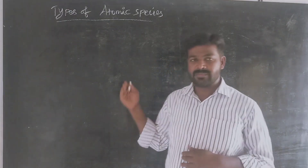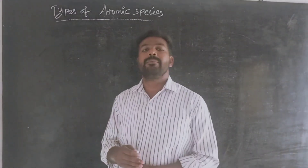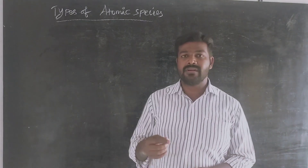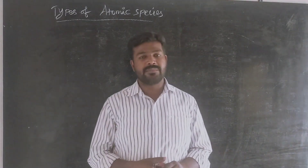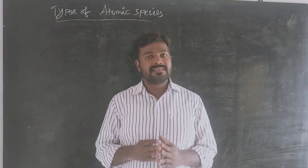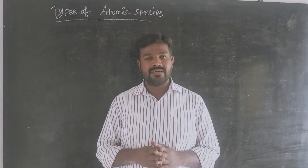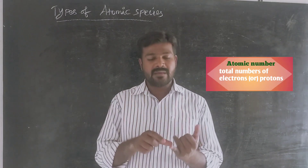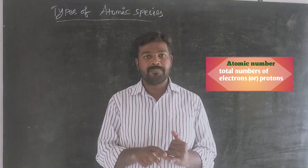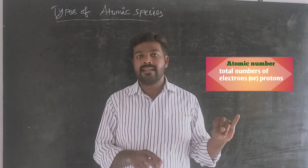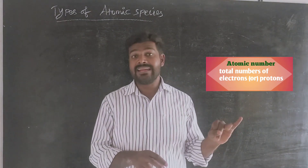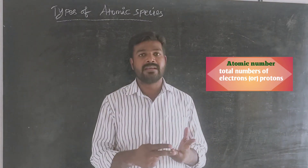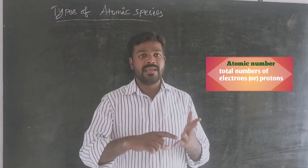We will talk about the atomic number and atomic species. In one atom, the atomic members include electrons and protons.